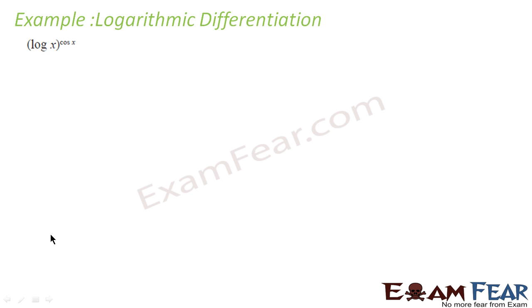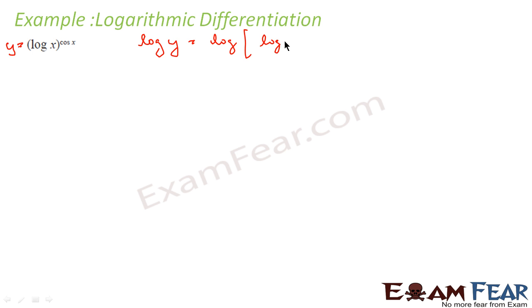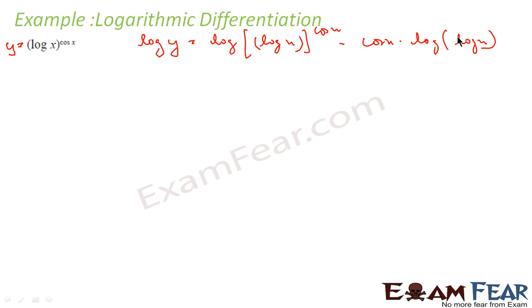Let us take one more example: y is equal to (log x) to the power cos x. Here also, if you want to find this in a normal way it is difficult. So let us do the same thing — apply log on both sides: log y becomes log of (log x) to the power cos x, which is nothing but cos x times log(log x).